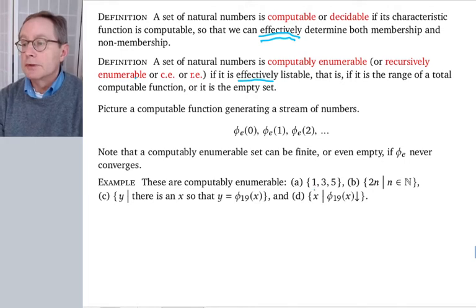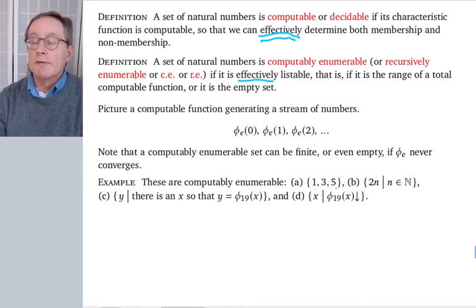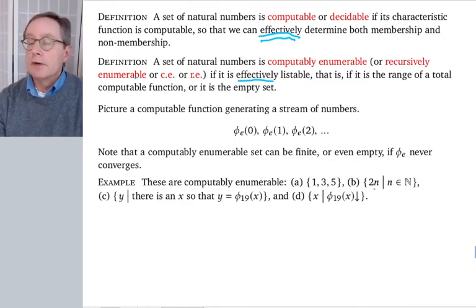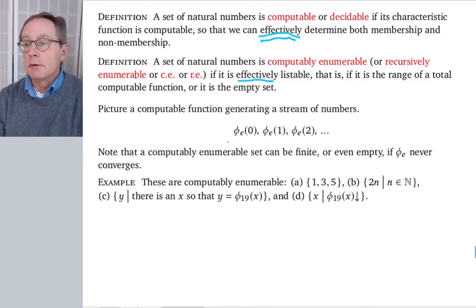Okay, so here's some examples of computably enumerable sets. The set 1, 3, 5, a finite set. You could easily write a program that, no matter what input you gave it, it only ever outputs a 1, a 3, or a 5. The even numbers, again, you can easily write a program, you could write a Turing machine. You could easily write a program that, if you give it an N, for example, it outputs 2N. That would be phi E here.